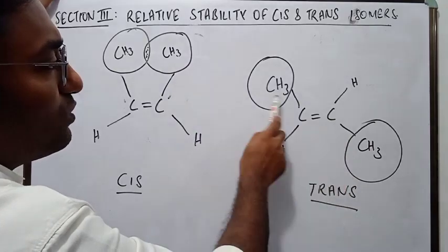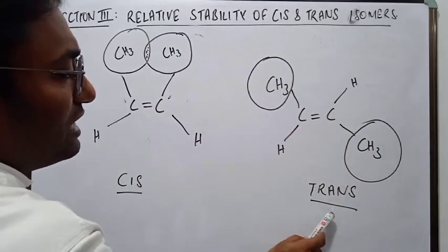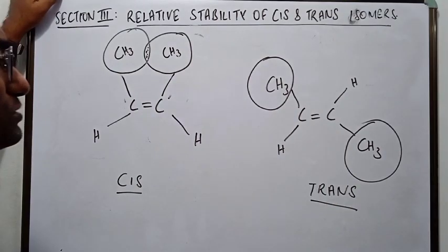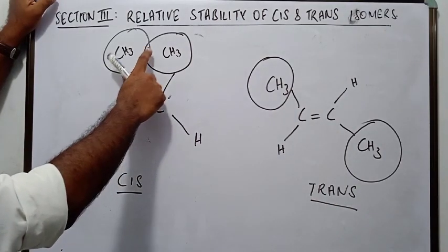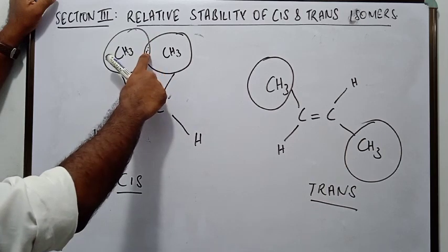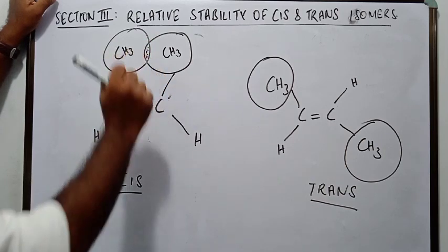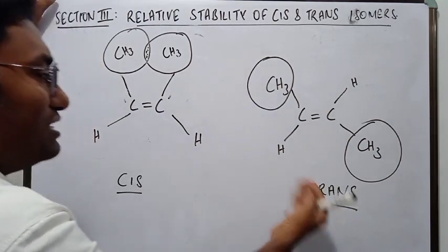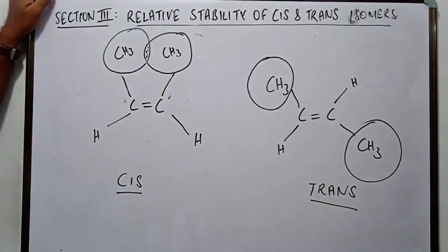There is no kind of steric repulsion in trans isomer because there is no overlap of bulky groups. While you can see here the steric repulsion because of overlap of their molecular orbitals. So therefore, for this reason the trans isomer is more stable than the cis isomer.